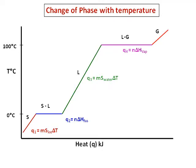Then for Q4, the liquid-to-gas phase transition, which is vaporization, Q4 equals the number of moles times the heat of vaporization. For Q5, the gas phase, Q5 = ms∆T using the specific heat of steam. So we have five heats — Q1, Q2, Q3, Q4, Q5 — for the different stages.